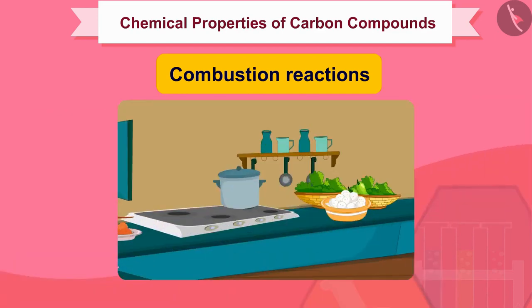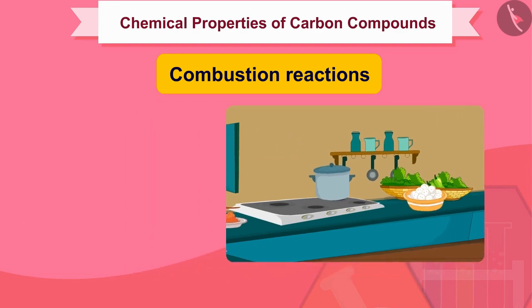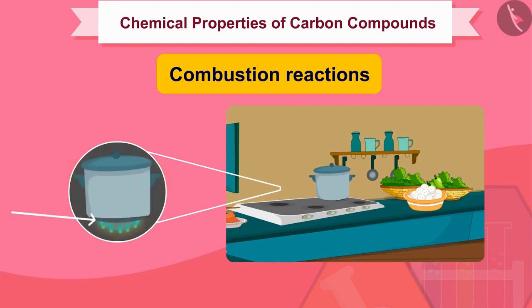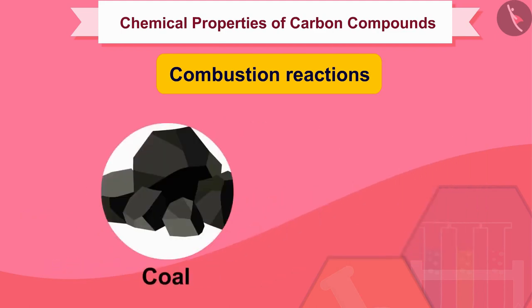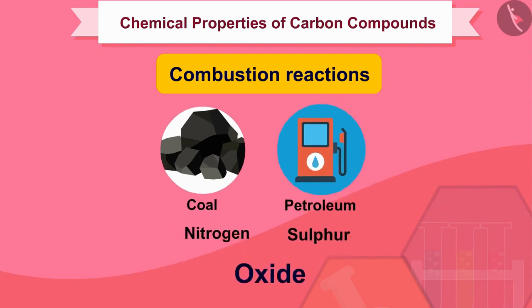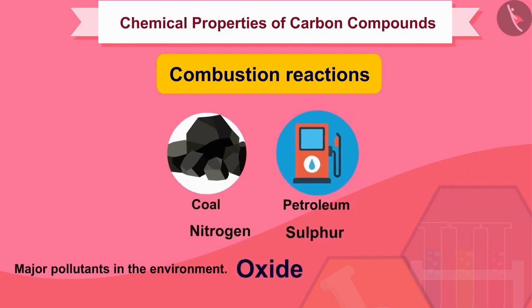The gas or kerosene stove used at home has inlets for air so that a sufficiently oxygen-rich mixture is burnt to give a clean blue flame. If you observe the bottoms of cooking vessels getting blackened, it means the air holes are blocked and fuel is getting wasted. Fuels such as coal and petroleum have some amount of nitrogen and sulfur, whose combustion results in the formation of oxides of sulfur and nitrogen, which are major pollutants in the environment.